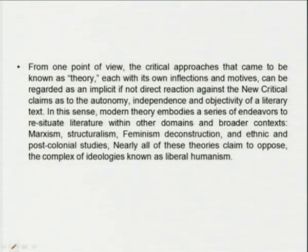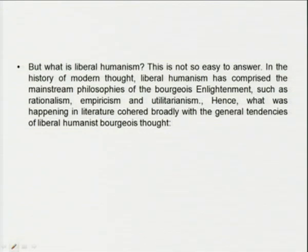Nearly all of these theories claim to oppose the complex of ideologies known as liberal humanism. Liberal humanism started more or less in the Renaissance, when man was placed as the center of the universe — man with his mind, his sense of reason, his sense of enlightenment. Liberal humanism has comprised the mainstream philosophies of the bourgeois Enlightenment, such as rationalism, empiricism, and utilitarianism.